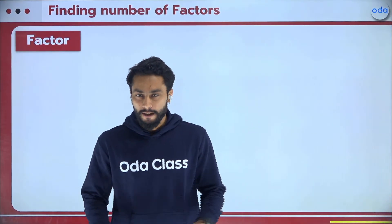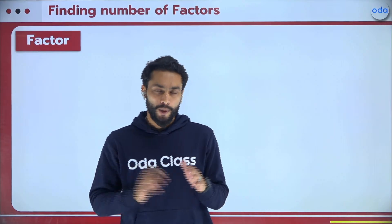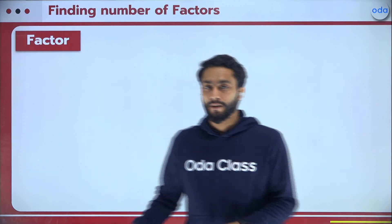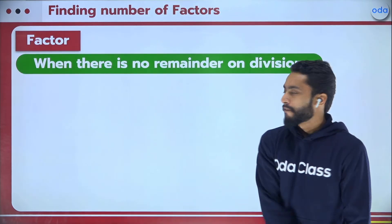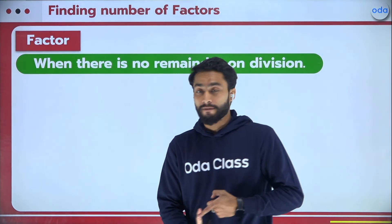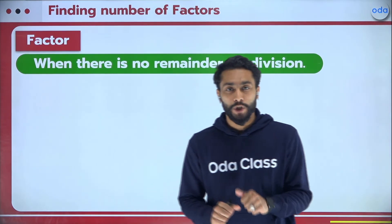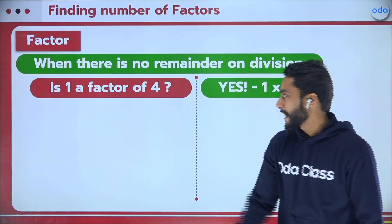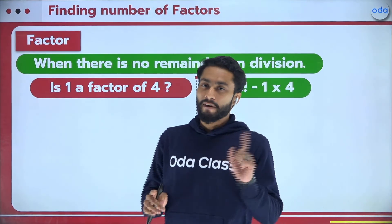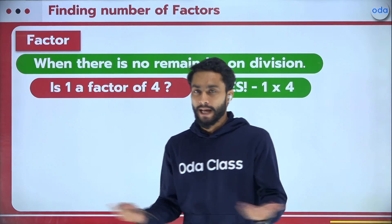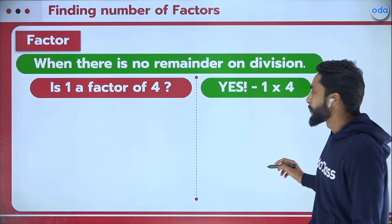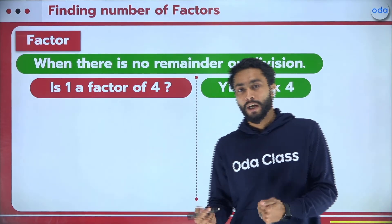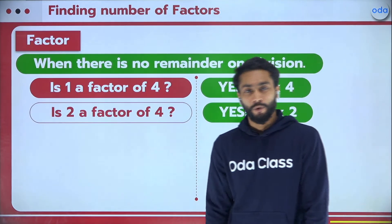Factors are numbers which divide another number without leaving any remainder. For example, is 1 a factor of 4? Yes — 1 times 4 is 4, so it divides without leaving any remainder. Is 2 a factor of 4? Absolutely — 2 into 2 is 4, so yes, 2 is also a factor.